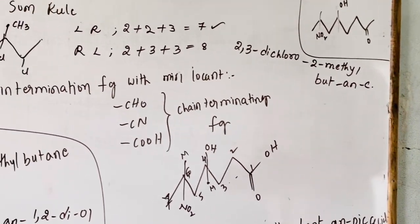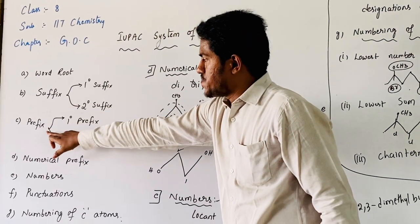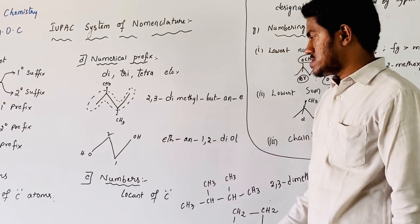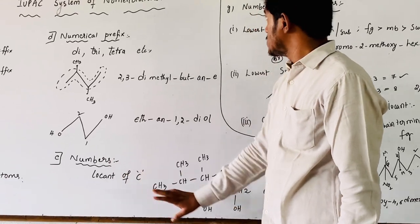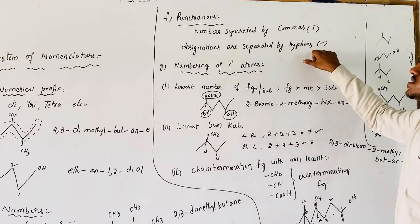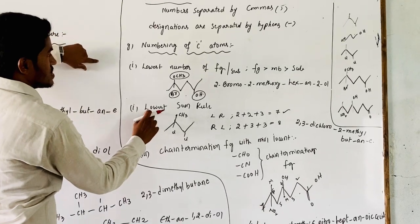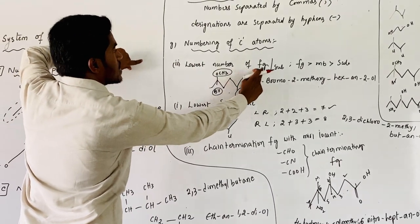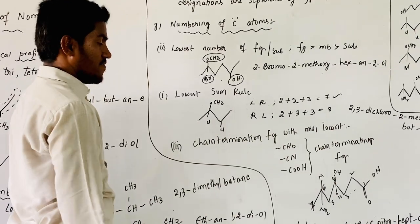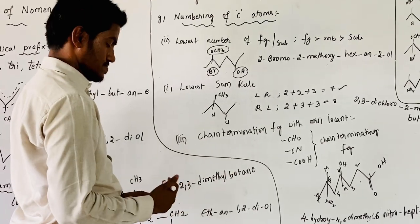In this session, we have discussed the IUPAC roots: word root, suffix, prefix, and numerical prefix — di, tri, tetra — along with some examples. And numbering of carbon atoms. Punctuations: numbers are separated by commas, designations are separated by hyphens. Numbering of carbon atoms follows three rules. First rule is lowest sum rule; second rule is lowest number of functional group or substituent; third rule is chain termination of functional group with minimum locant. If the third rule is valid, then first and second are invalid. Thank you for watching.